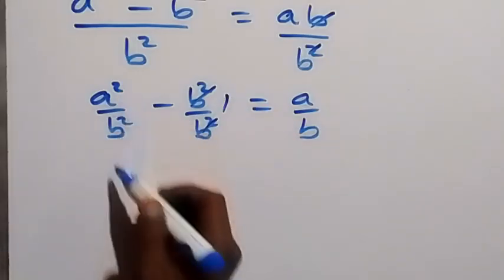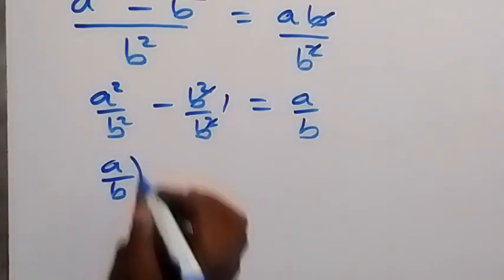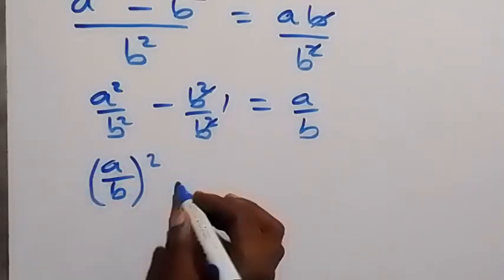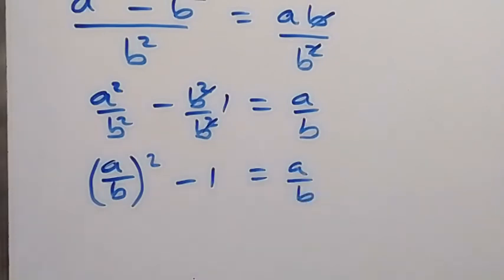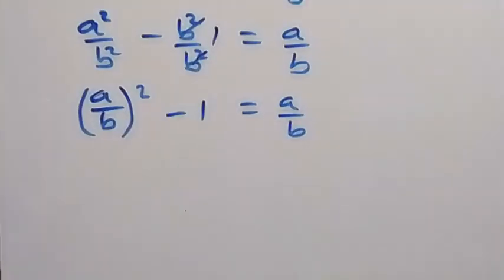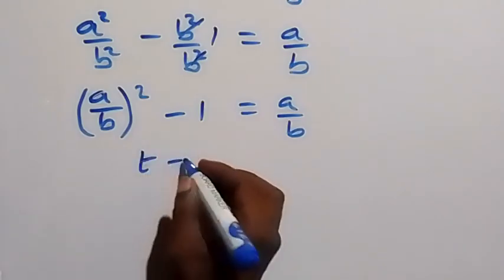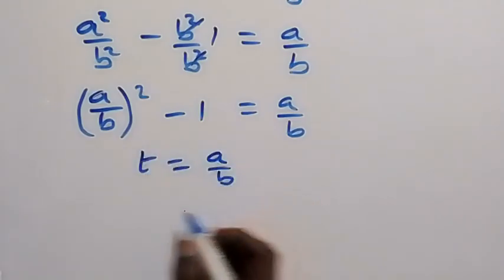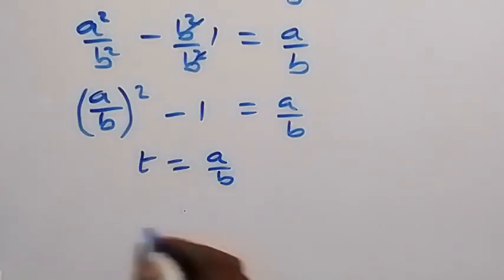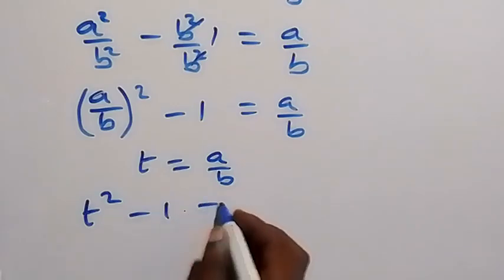Taking the square out as a common factor, we have (a over b) all squared, minus 1, equals a over b. From here, a over b is common, so let t equal a over b. We can write this equation in terms of t, and this will be t squared minus 1 equals t.